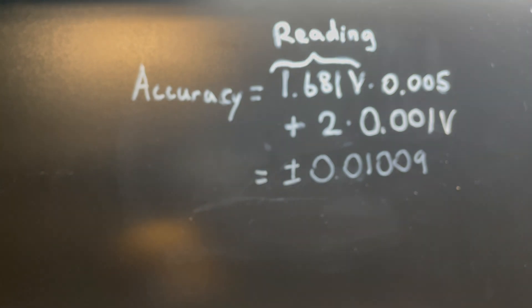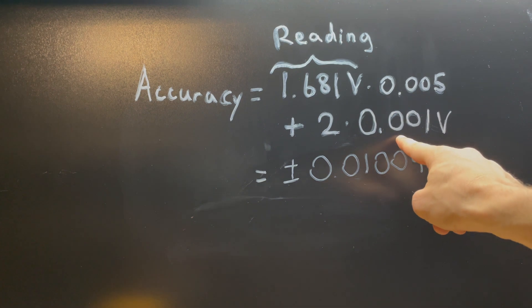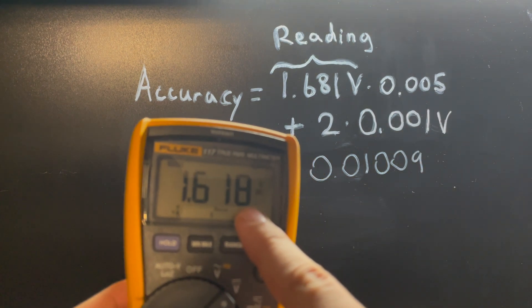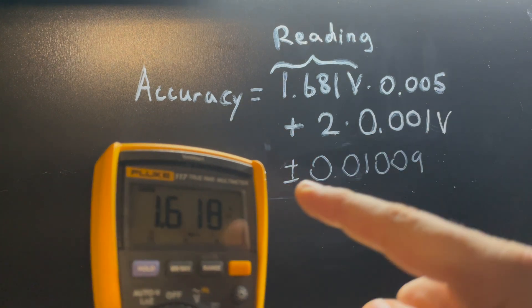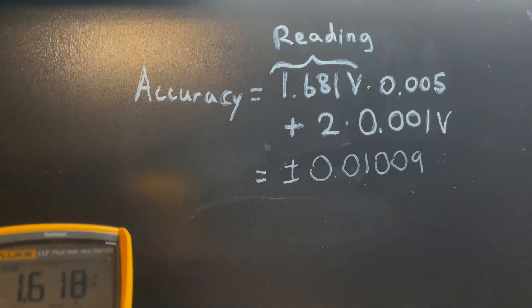This means that when I go to do my accuracy, I have my reading. Here I have my lowest digit count value, which is based off that lowest digit right there. Because I was able to maintain that digit, it drastically increases my accuracy.